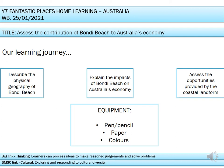The second part of our lesson is explaining the impacts of Bondi Beach on Australia's economy — what is happening to Australia's economy because of Bondi Beach. And then finally we're going to look at just how good those opportunities and impacts of Bondi Beach are for Australia. The three things you'll need today are a pen or pencil, some paper, and some colours for our final task.